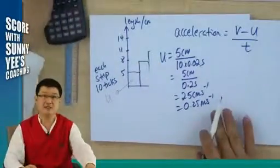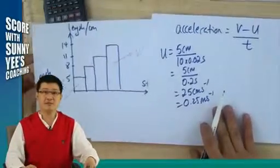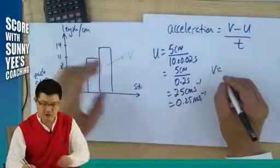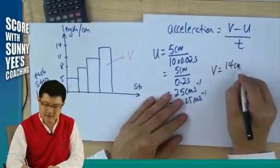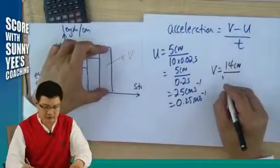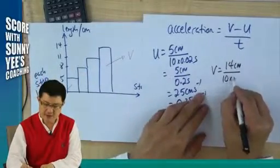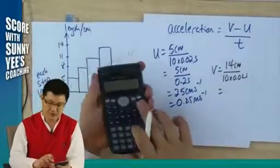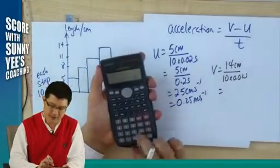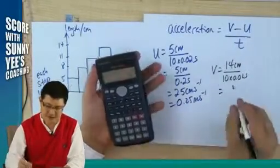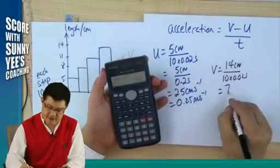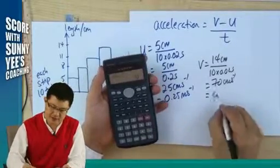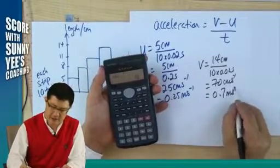Your final velocity v must be the last strip. In this case, taking the last strip as final, it will be 14 cm divided by 10 ticks times 0.02 second. That gives 14 divided by 0.2, which equals 70 cm per second, or 0.7 meter per second.